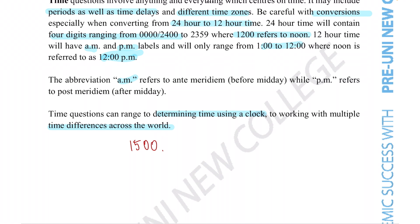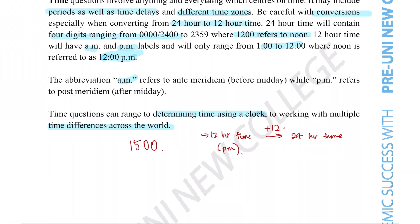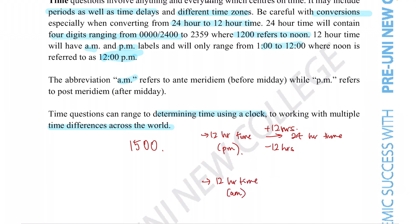We can easily convert between 24-hour and 12-hour time. To go from 12-hour PM time to 24-hour time, all we need to do is add 12 to the hour. To go back from 24-hour to 12-hour PM time, subtract 12 hours to get the answer. If we are working in AM — that is, the time is in the morning before noon — then to get to 24-hour time, all we need to do is add a zero in front of the hour. For example, if the time is 3 AM, in 24-hour time that would just be 0300.